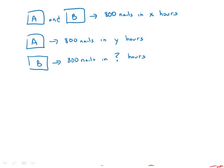Working simultaneously at their respective constant rates, machine A and B produce 800 nails in X hours. Working alone at its constant rate, machine A produces 800 nails in Y hours. In terms of X and Y, how many hours does it take machine B working alone at its constant rate to produce 800 nails?